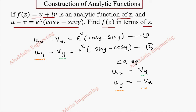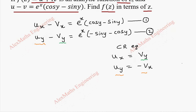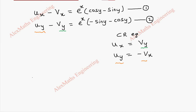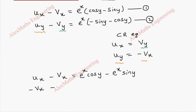The first equation stays as it is: ux minus vx equals e^x·cos y minus e^x·sin y. Similarly, the second equation becomes: minus vx minus ux equals e^x·cos y.